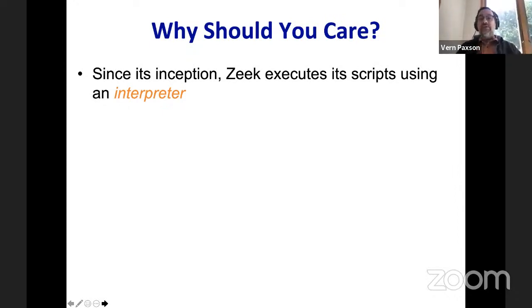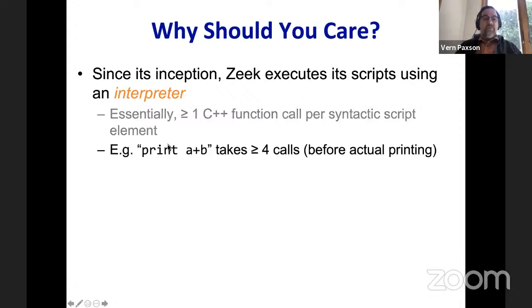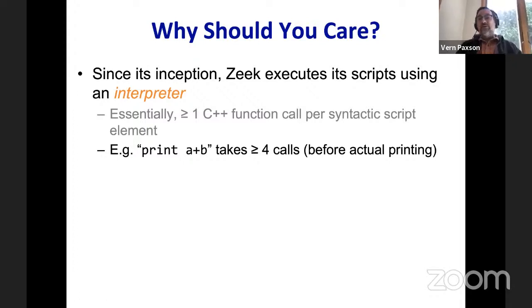Zeek executes its scripts using an interpreter. The interpreter takes the syntactic form and turns it into a tree, and when a given script is running it walks that tree to evaluate each of the elements. What this boils down to is that every syntactic element in a script is at least one C++ function call. For example, executing 'print a plus b' requires at least four function calls — one for a's value, one for b's, one to add them, and one to feed that to print. So this is not super fast.